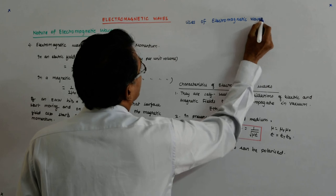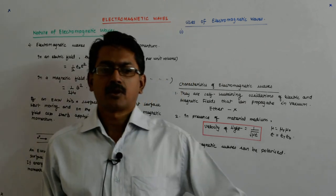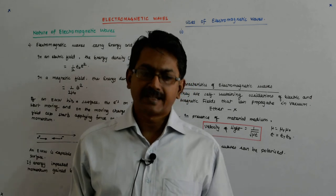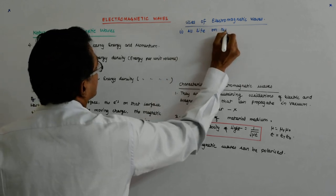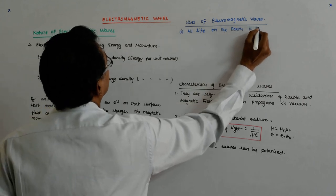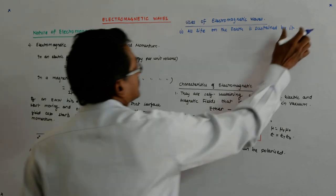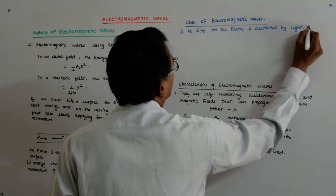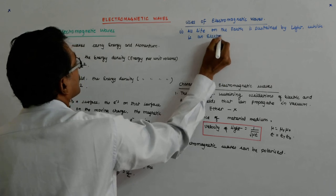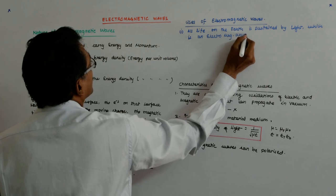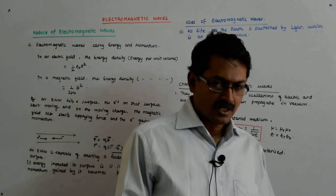Uses of electromagnetic waves. The first use is that you are alive. We are alive only due to the electromagnetic wave called light. Fine? So, all life on earth is sustained by it. By light which is an electromagnetic wave.